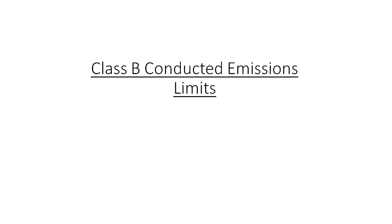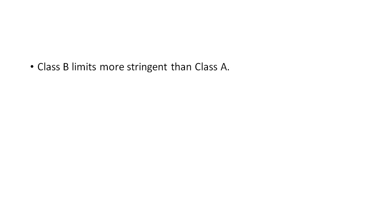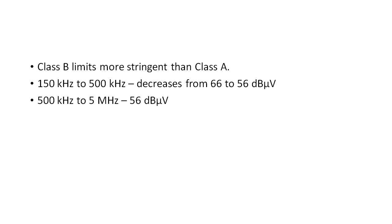So now getting back to our discussion of conducted emissions, we need to move on to the class B conducted emissions limits. As I already mentioned, class B limits are more stringent than class A limits because of the residential versus industrial environment. For class B devices, from 150 kHz to 500 kHz, the limit decreases with the logarithm of the frequency from 66 dB microvolts to 56 dB microvolts. From 500 kHz to 5 MHz, the limit is 56 dB microvolts. And from 5 MHz to 30 MHz, the limit is 60 dB microvolts.